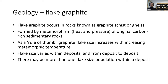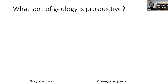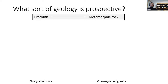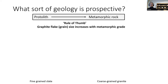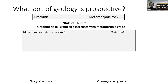What sort of geology is prospective? We start with the protolith, which may be a carbon-rich sediment, which then gets metamorphosed. The rule of thumb is that graphite flake size increases with metamorphic grade. Looking at low grade versus high grade: temperatures are around 300°C for low-grade metamorphism up to 700°C or more for high grade. There are a lot of volatiles and water floating around in the low-grade material, which we'll see in the mineralogy.